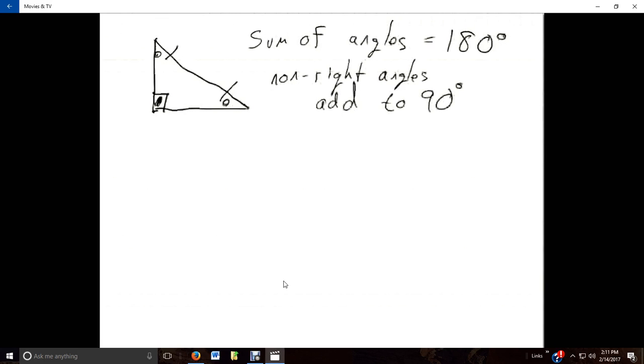We have a special word for two angles that add up to 90. We say that they are complementary. So the two angles that are not the right angle are complementary to one another.